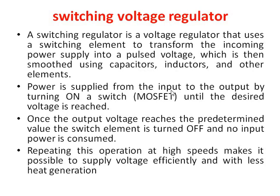The output average voltage is maintained constant by switching the device on or off. Power is supplied from the input to the output by turning on a switch until the desired voltage is reached. The switching element may be a MOSFET, IGBT, or BJT. When the output voltage drops below the desired level, the switching device is turned on; once it reaches the desired value, the switch is turned off. By turning the MOSFET on and off, we get the desired output voltage.